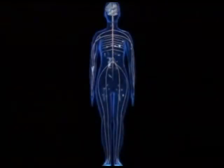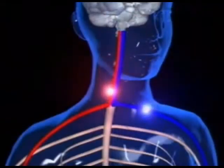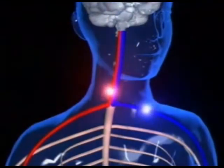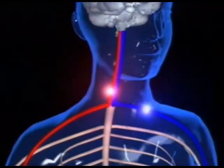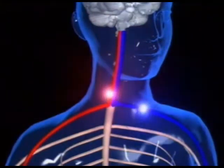The nervous system has two functions. Some nerves receive information and carry messages to the brain or spinal cord. Others carry instructions from the central nervous system.